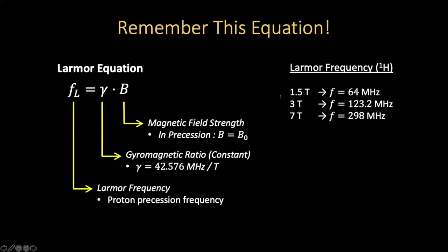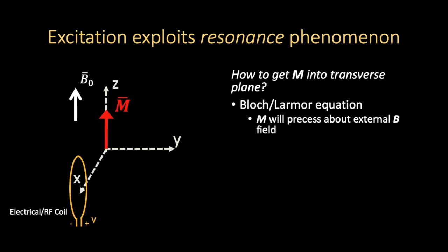If we look at what the Larmor frequencies are at a couple of clinical field strengths: it's 64 MHz at 1.5T, 123 MHz at 3T, and nearly 300 MHz at 7T. So how exactly did we get our magnetization down into the transverse plane in the first place? We know that the dipoles are all aligning along B0 — so how did we get them away from B0 in order to commence this precession process?